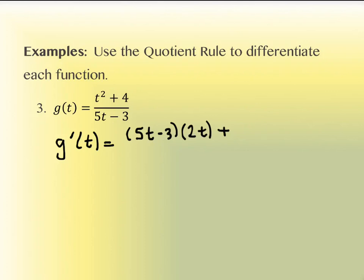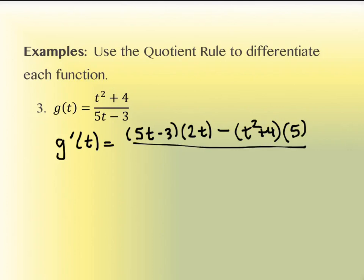Then we subtract — not add. In exactly the opposite order: write the numerator, t² + 4, and take the derivative of the denominator. The derivative of 5t − 3 is 5. All of this is written over the denominator squared: (5t − 3)².